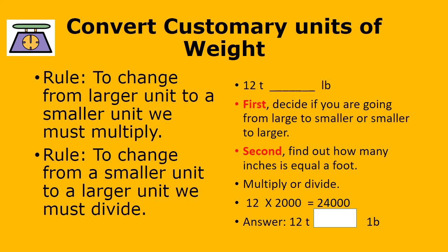Let's look at the last one: 12 tons equals blank pounds. Tons is bigger than pounds, so we're going from larger to smaller and we multiply. How many pounds equal a ton? 2,000. So 12 times 2,000 gives us 24,000. Great job.